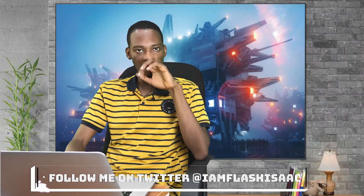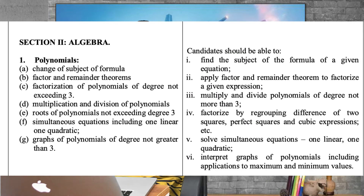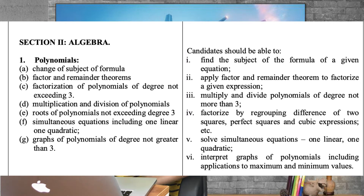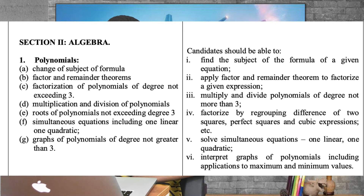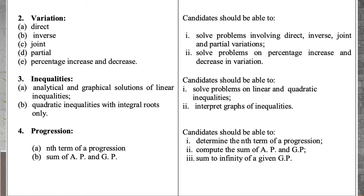The next section is Algebra. In algebra you need to cover polynomials, but the degree should not be more than three — so the highest power is three; don't do polynomials of degree four, five, or six. You also need to solve simultaneous equations involving one linear and one quadratic equation. Variation is also under algebra: direct variation, inverse variation, partial variation, and percentage increase and decrease.